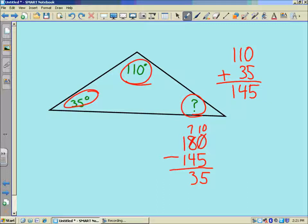And there's the measure. 35 degrees. Now, to double check your work, it's always good to double check. You can take the three measures. You've got 110, 35, plus 35. Add those up.